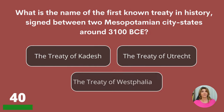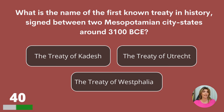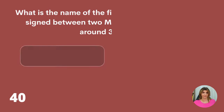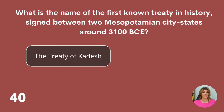What is the name of the first known treaty in history, signed between two Mesopotamian city-states around 3100 BCE? The Treaty of Kadesh, the Treaty of Utrecht, or the Treaty of Westphalia? The Treaty of Kadesh.